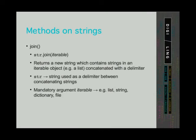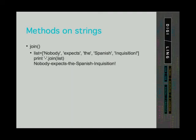And finally, we come to the last method in this lesson: the join method. We can think of the join method as the opposite of the split method. It returns a new string which contains strings from, for example, a list and concatenates those strings using a delimiter. The string being used as a delimiter is the string we call this function on. For example, we take one of the lists from the previous example and want to turn it back into a string, but this time using a minus sign as delimiter. So we call the join method on the minus sign and put the list as the mandatory argument. The program returns a new string where all elements are concatenated using the minus sign.